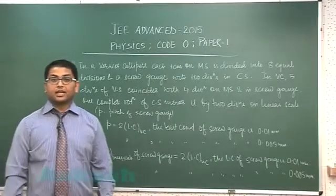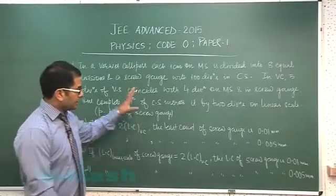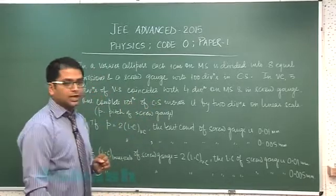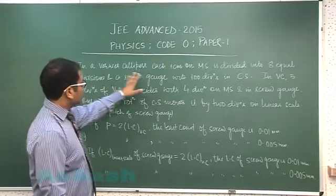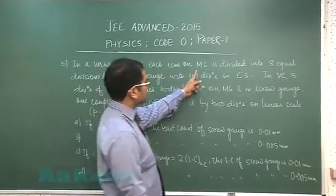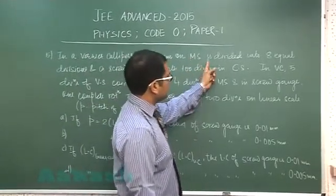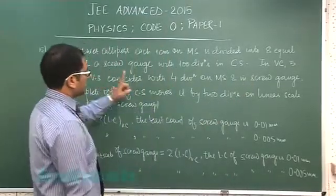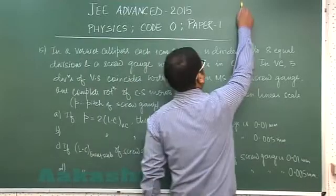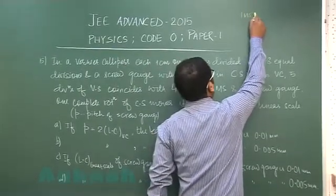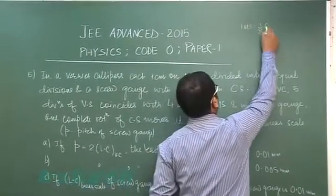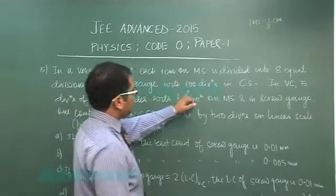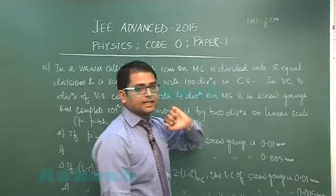Question number 15 is regarding measuring instruments and touches both the vernier calipers as well as the screw gauge. In a vernier caliper, each one centimeter on the main scale MS is divided into 8 equal divisions, meaning one main scale division would be 1 by 8 centimeter. There's also a screw gauge with 100 divisions in the circular scale.